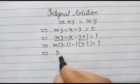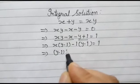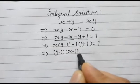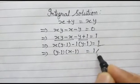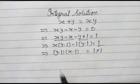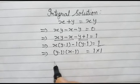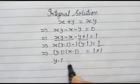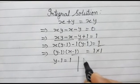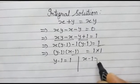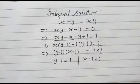So we have y minus 1 and x minus 1 as factors is equal to 1 into 1. Now we have two cases: either y minus 1 is equal to 1 or x minus 1 is equal to 1.